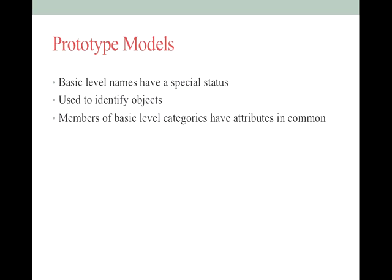How do we know that three-level structure is really true? Basic level names seem to have special status — they're used to identify objects. You say 'I'm going to go sit in the chair,' not 'that desk chair' or 'this type of chair.' You say 'I have a dog,' and then people ask 'what kind?' Members of basic level categories are also what you usually use for comparison — like comparing cats and dogs, which brings in feature comparison theory.